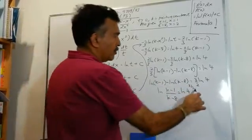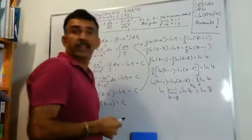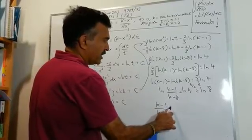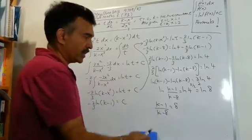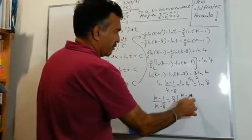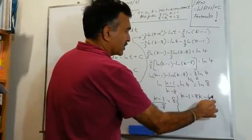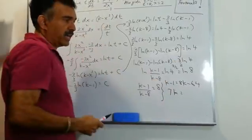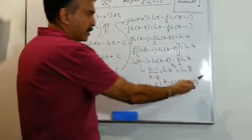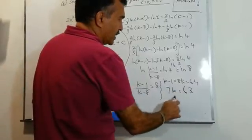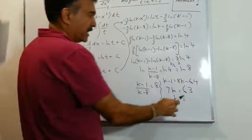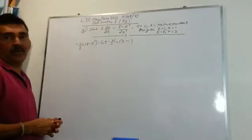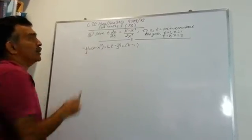Now 4^(3/2) = 8, so we can replace that with ln 8. Dropping the logs, we get (k - 1)/(k - 8) = 8. Solving: k - 1 = 8k - 64, so 63 = 7k, therefore k = 9.